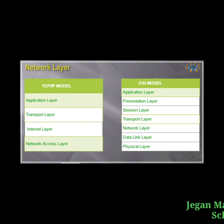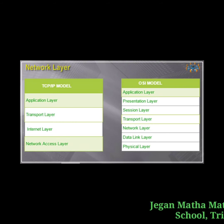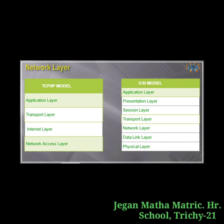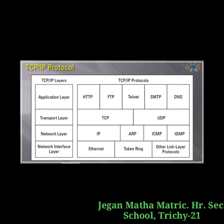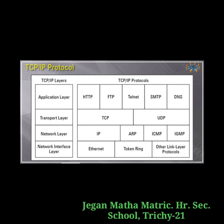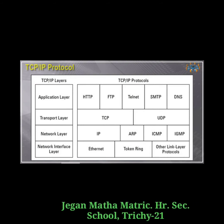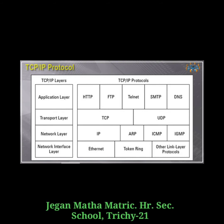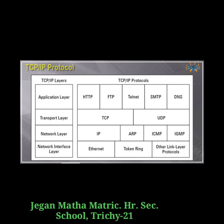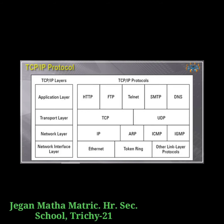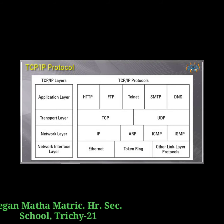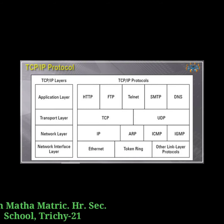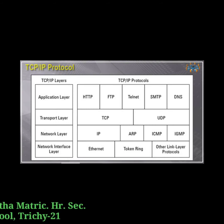In the OSI model, the seven layers are: physical layer, data link layer, network layer, transport layer, session layer, presentation layer, and application layer. In the TCP/IP model, the four layers are: network access layer, internet layer, transport layer, and application layer. At the network interface layer, protocols like Ethernet, token ring, X.25, frame relay, and ATM are used for local and wide area networks.